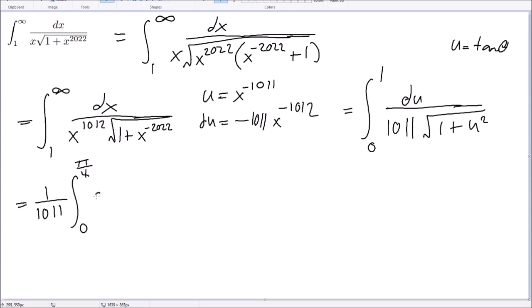This simplifies to secant theta d theta. And so now, answer is ln of secant theta plus tangent theta.